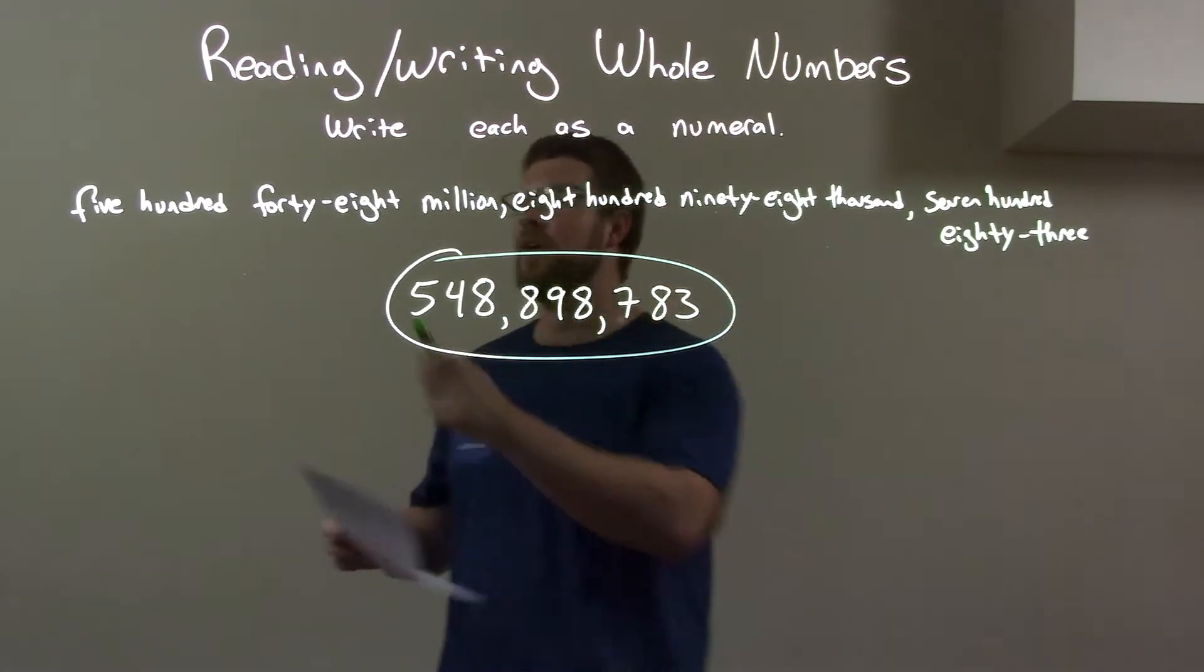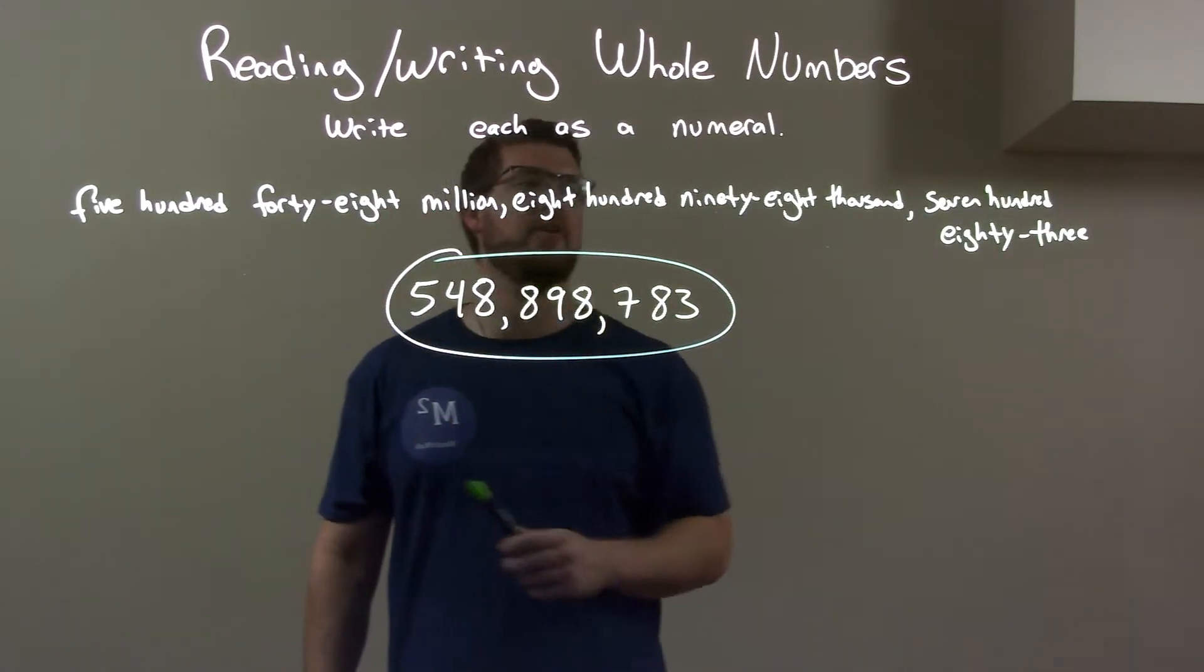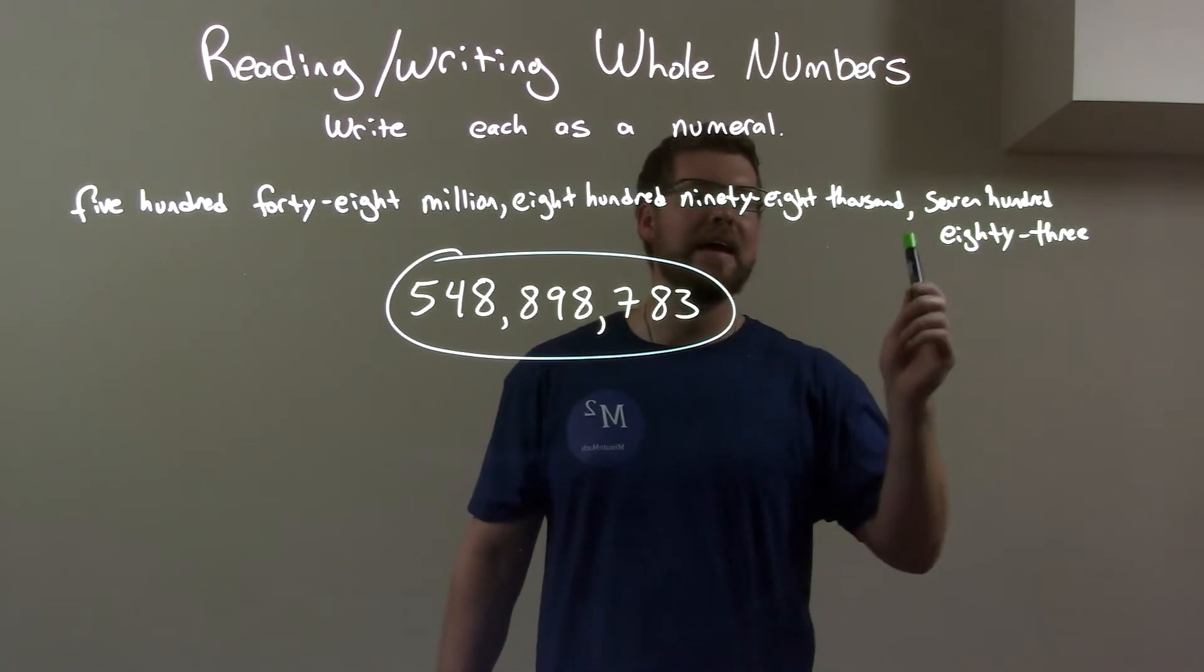So, a quick recap. We're giving five hundred and forty-eight million, eight hundred and ninety-eight thousand, seven hundred and eighty-three.